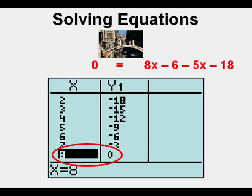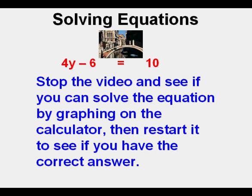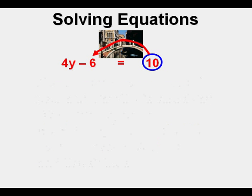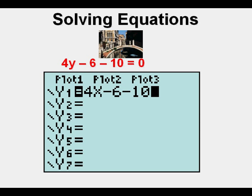Now here's another problem. Stop the video and see if you can solve it by graphing on the calculator. To me, the easiest way to solve one side for zero is to move the 10 over to the left side of the equal sign. So now we have minus 10 on the left side and zero on the right side.